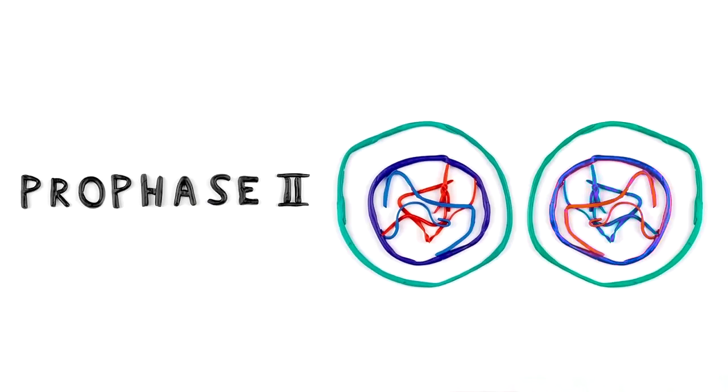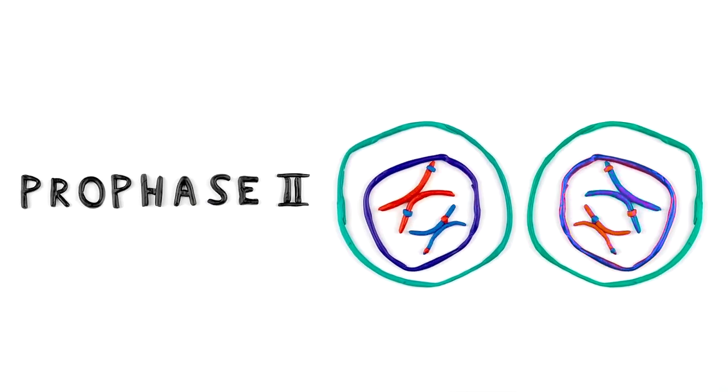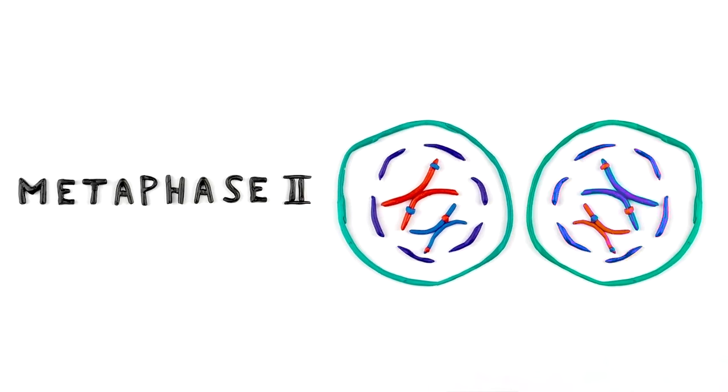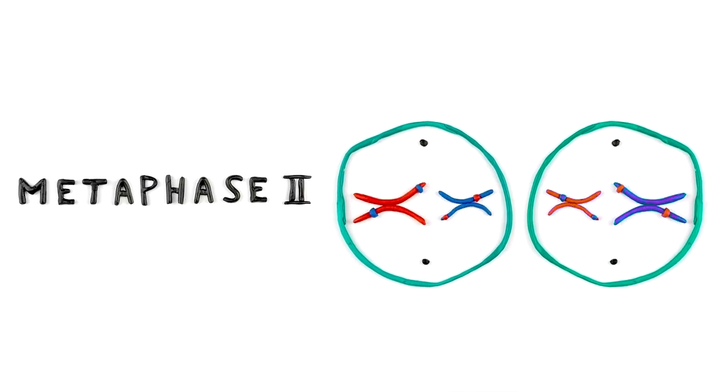In prophase II, the chromosomes condense and the nucleus breaks down. In metaphase II, the chromosomes line up in the middle of the cell.